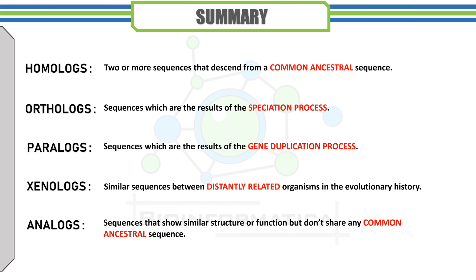In summary: homologues are two or more sequences that descend from a common ancestral sequence. Orthologues are sequences which are the result of a speciation process. Paralogues are sequences which are the result of a gene duplication process. Xenologues are sequences arising from lateral gene transfer. Genologues are similar sequences between distantly related organisms in evolutionary history. Analogues are sequences that show similar structure or function but don't share any common ancestral sequence.